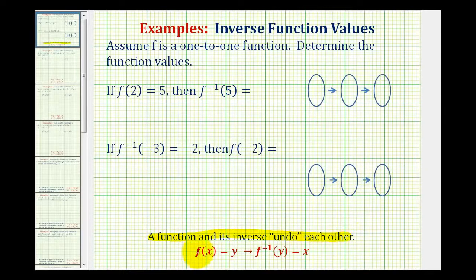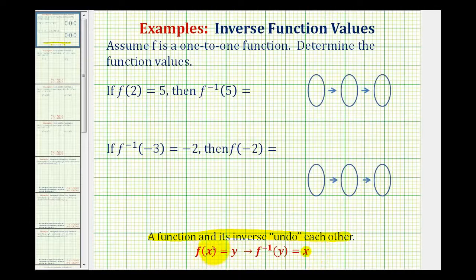Which means if f of x is equal to y, and if we make the output y the input into f inverse, the output will be x. Notice how these two functions undo each other because the original input was x, and the final output of the inverse function is also x.